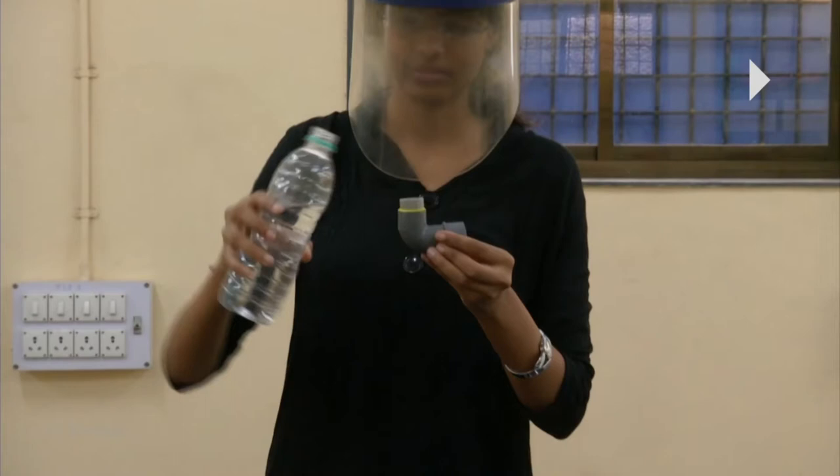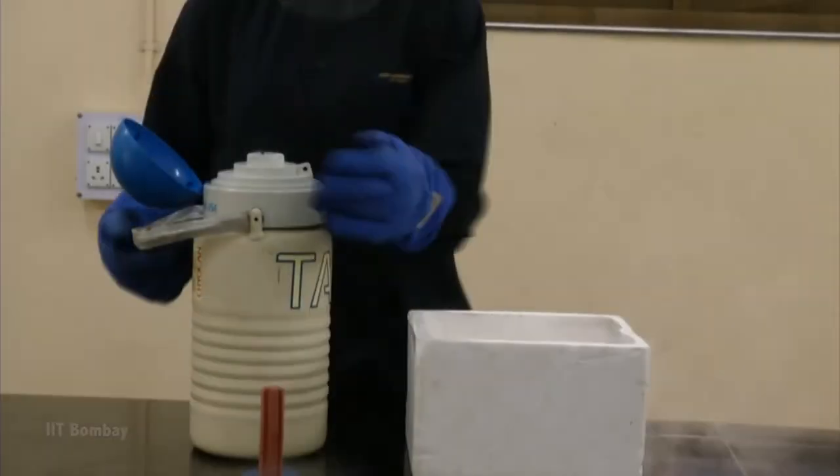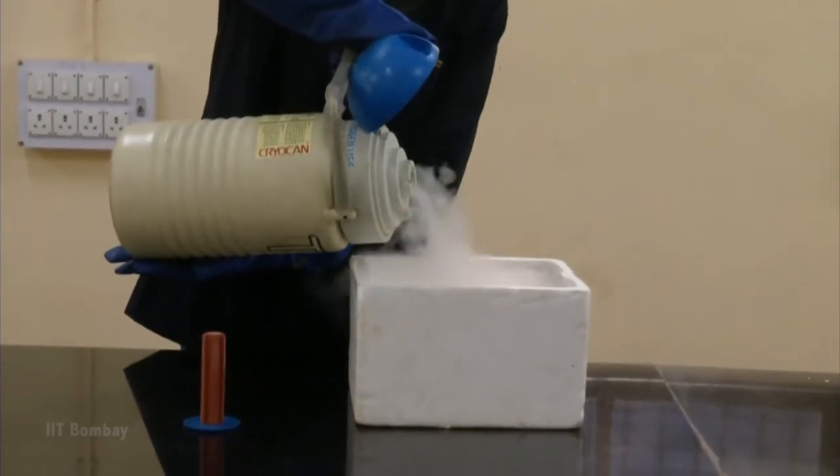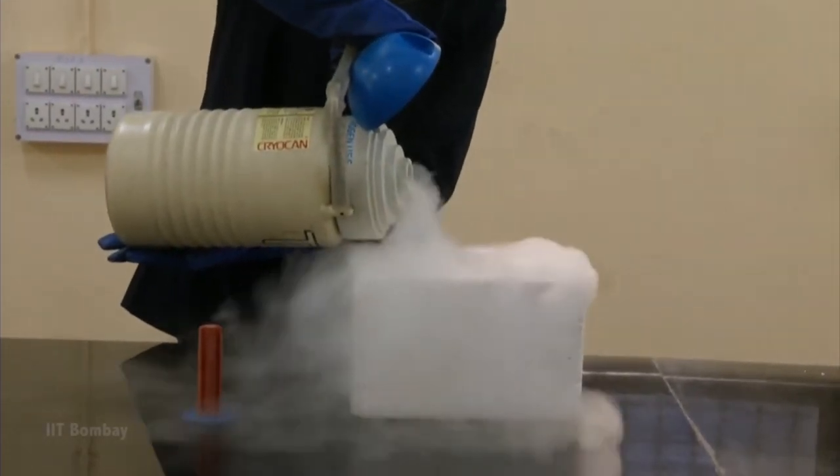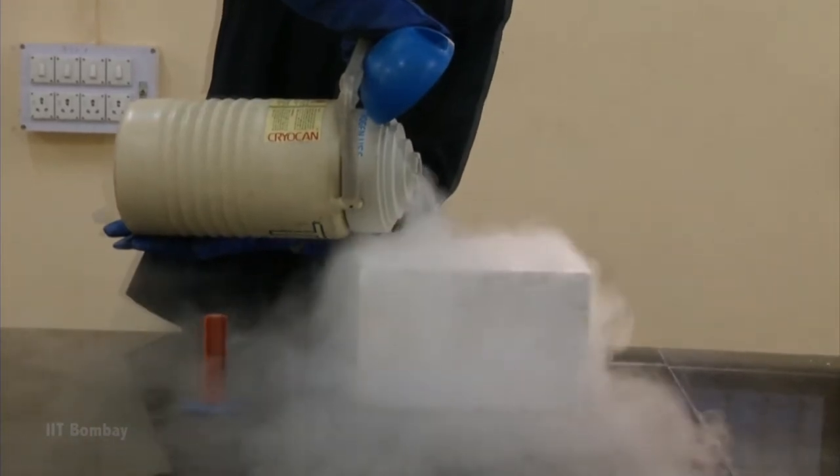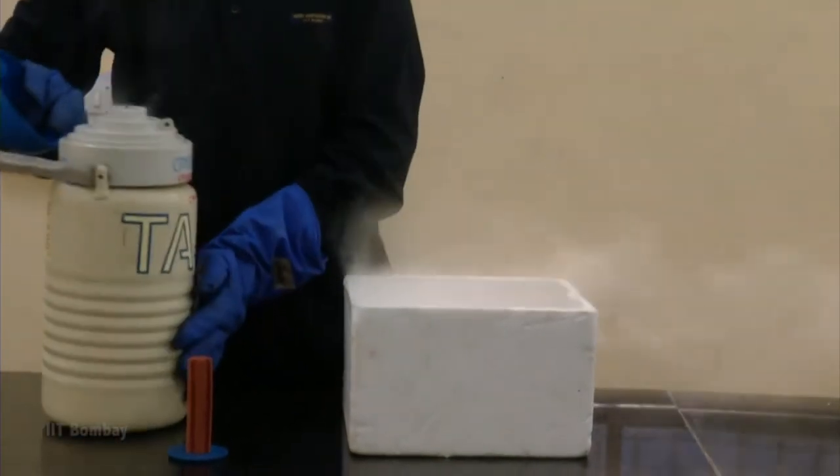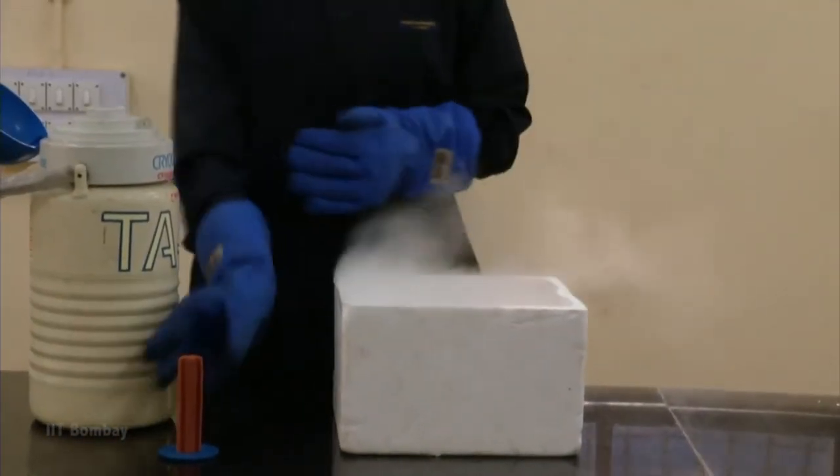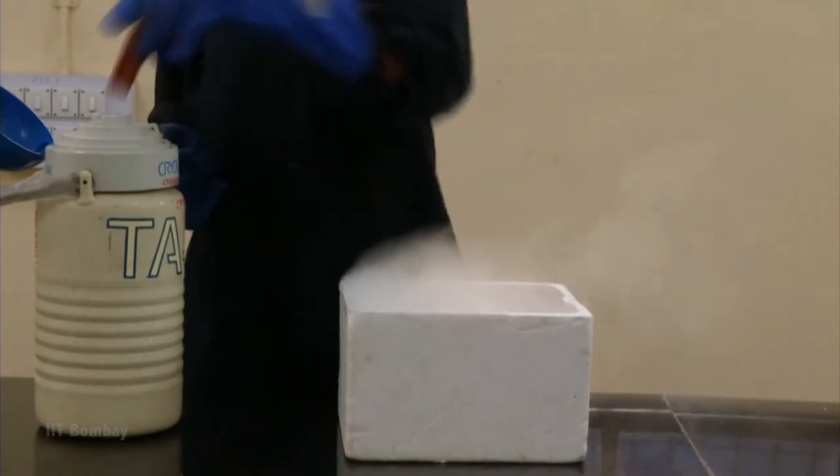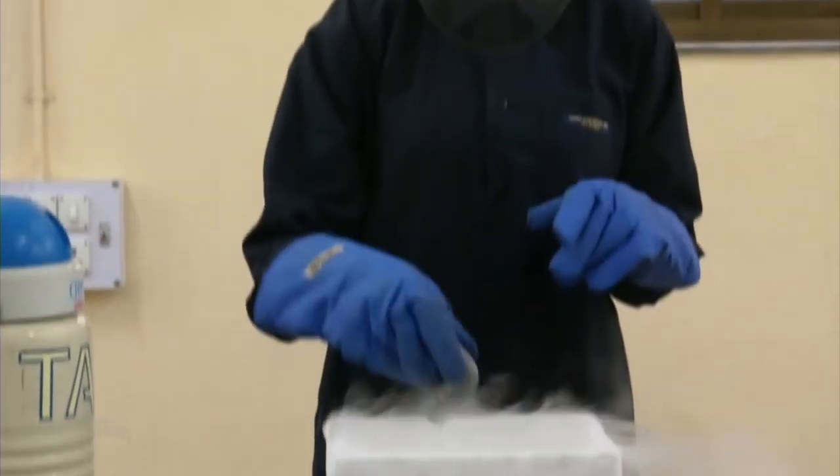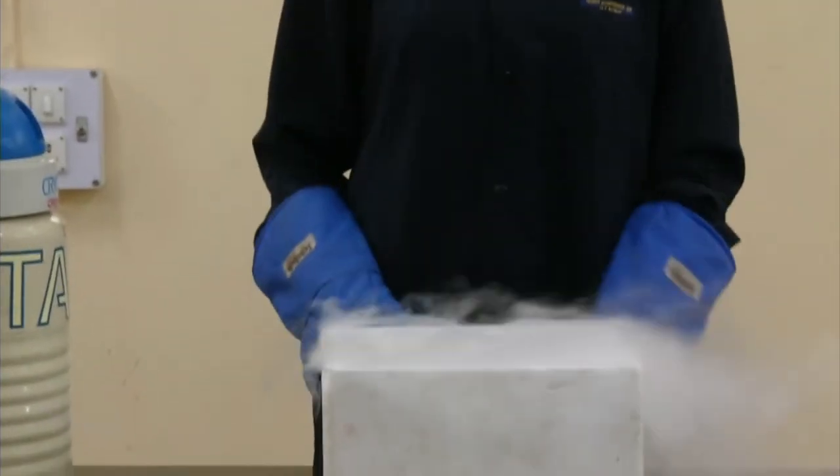Liquid nitrogen, as you know, exists at minus 196 degrees centigrade or about 77 Kelvin. This is liquid nitrogen transferred from a specially made container into a thermocol container. You can see that it looks like water only and it is getting evaporated. I will put this PVC sample filled with water in liquid nitrogen.